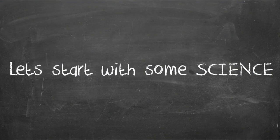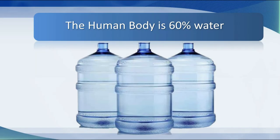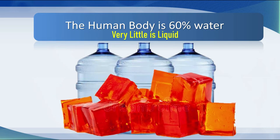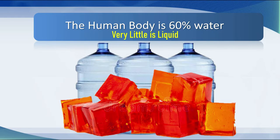Let's start with some science. Pretty much everybody knows that the human body is made up 60% or so of water — 55% for females. But in fact, very little of this is liquid. Just remember this picture of gelatin, or jello, or jelly. This is very much what the liquid in your body is made up of.